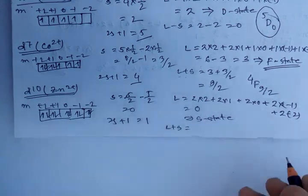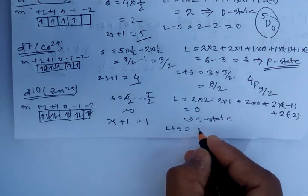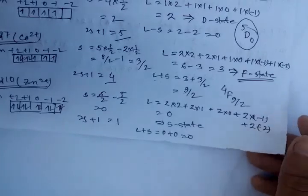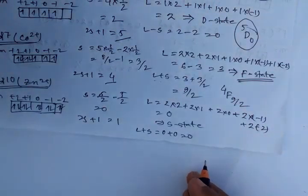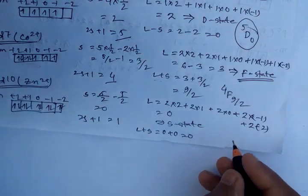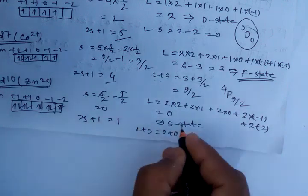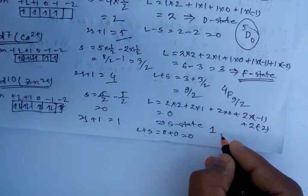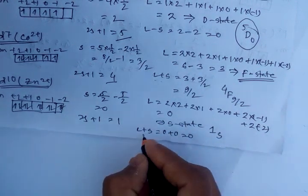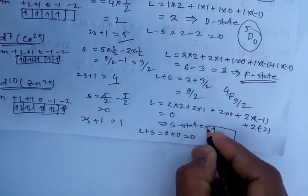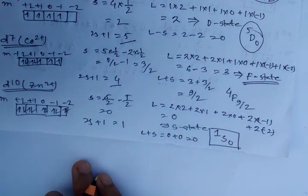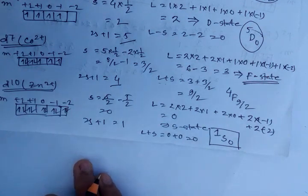Since the orbital is fully filled (more than half), we count J = L + S. L = 0 and S = 0, so J = 0. The ground state energy term symbol for the d¹⁰ system, zinc 2 plus, is 2S+1 = 1, L = 0 (S state), J = L + S = 0, giving ¹S₀. Thanks for watching.